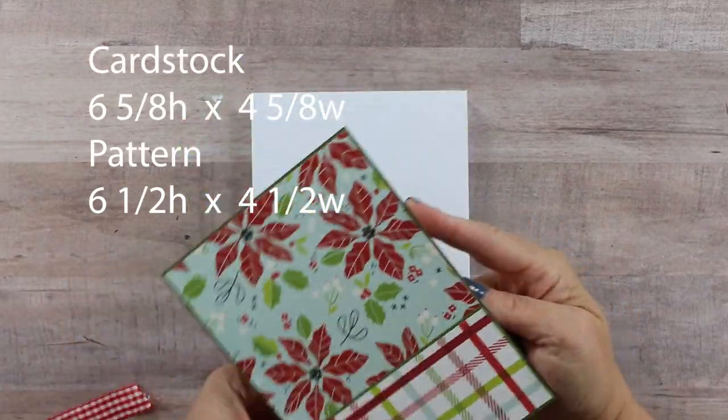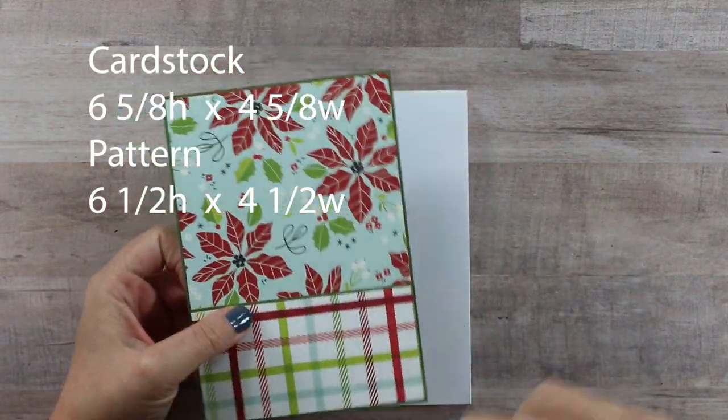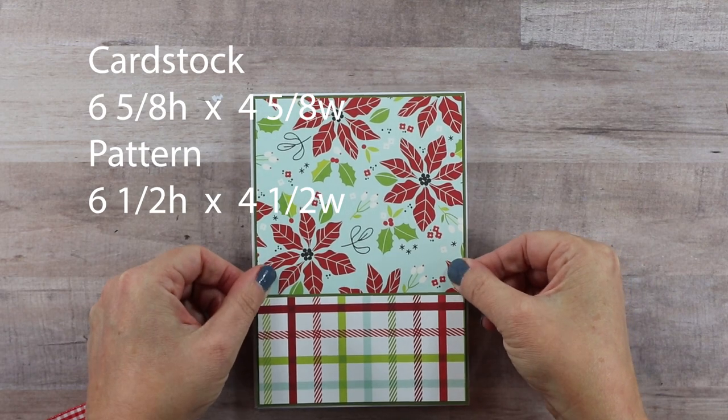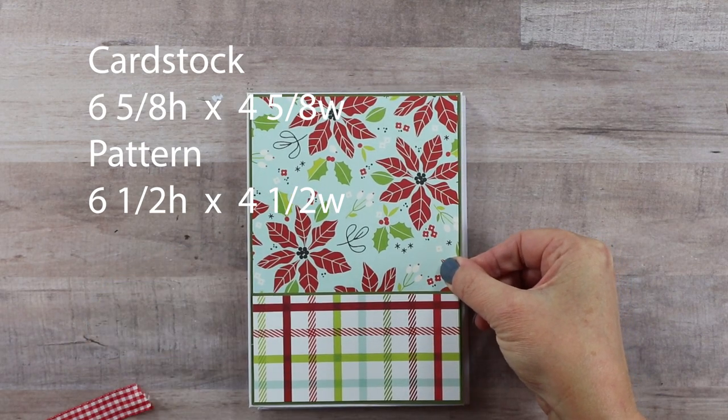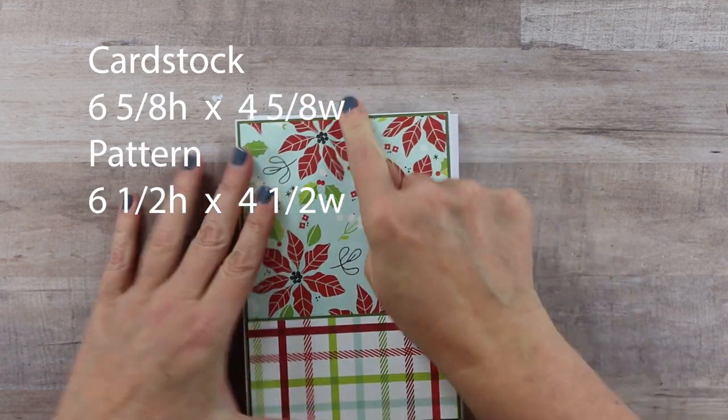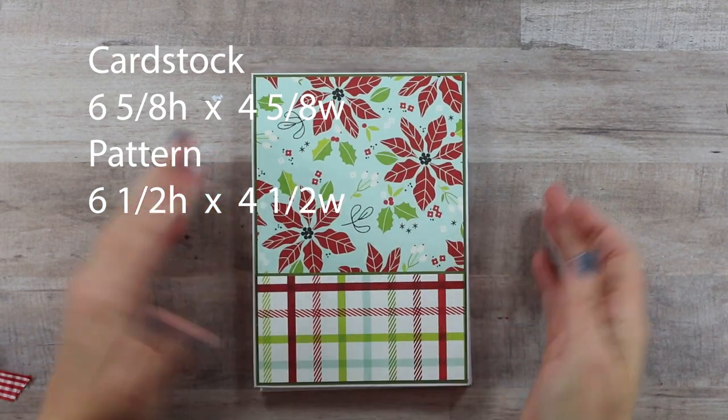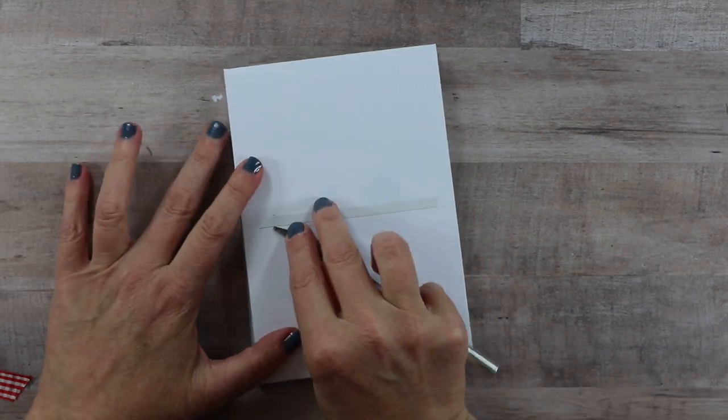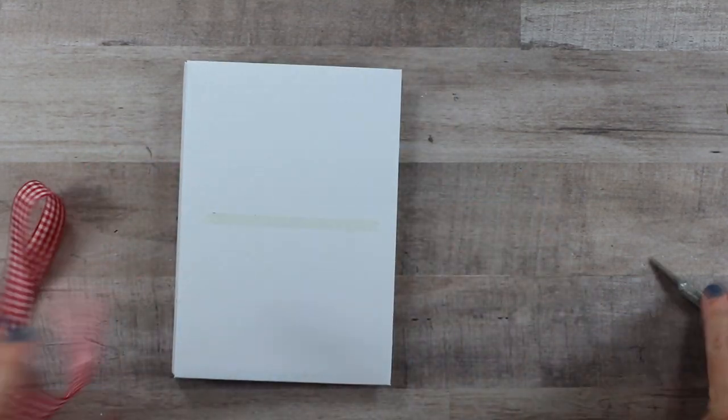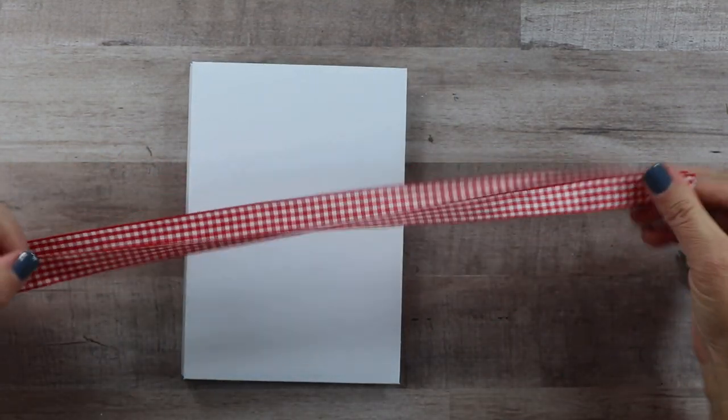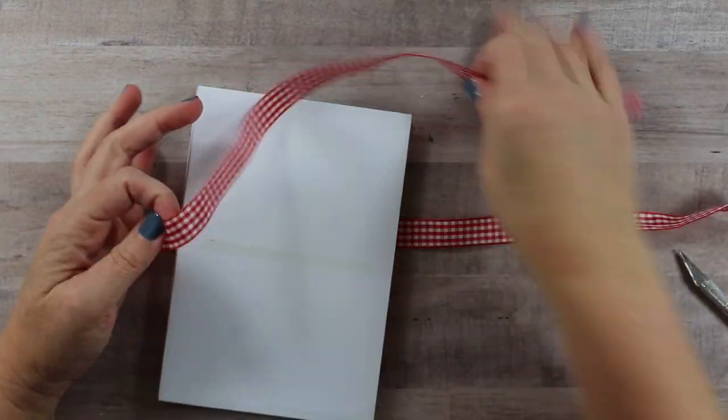Now I want to finish the back cover, and for that I did decide to add a solid green cardstock. The cardstock is going to measure six and five-eighths high by four and five-eighths wide, and the pattern paper is six and a half by four and a half.